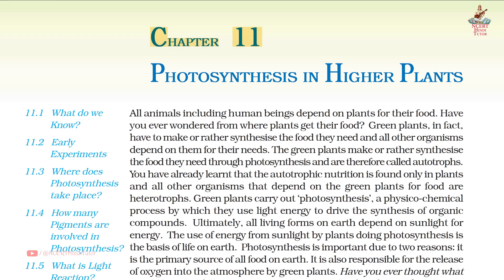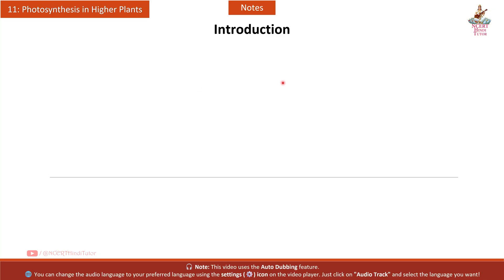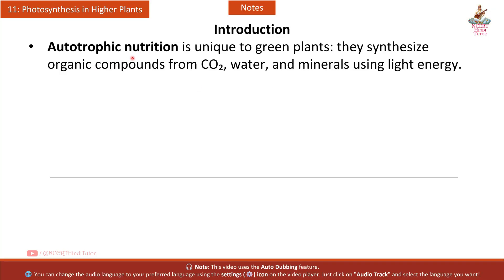Chapter 11, Photosynthesis in Higher Plants — Short Notes and Summary from Class 11, Subject Biology. Introduction: autotrophic nutrition is unique to green plants. They synthesize organic compounds from CO2, water, and minerals using light energy.